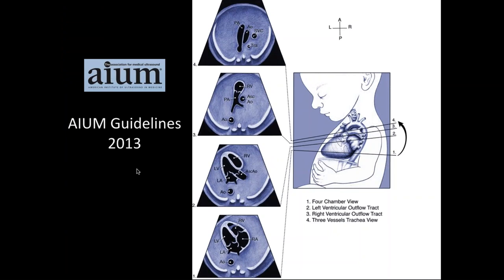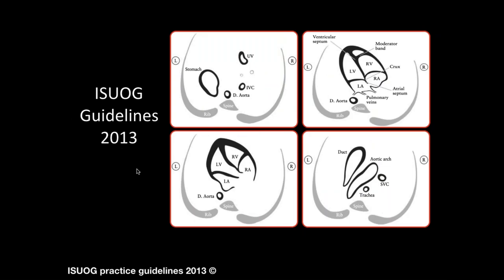Looking at the AIUM guidelines for the performance of the fetal echocardiography exam, the three-vessel trachea view is included. However, it is not listed in the basic obstetric ultrasound exam — the AIUM guidelines state that evaluation of the outflow tracts should be performed but do not specify which views to use. The ISUOG guidelines for the performance of the obstetric ultrasound exam do include the three-vessel trachea view. It is an easy view to get because it's a transverse slide up into the chest, and sliding up into the upper chest will display it without requiring much rotation.